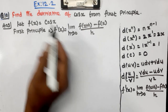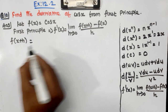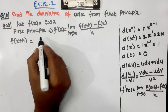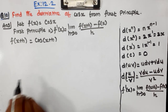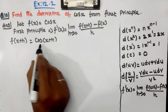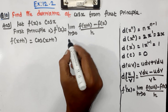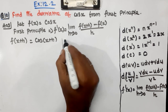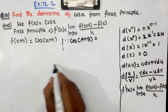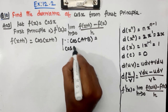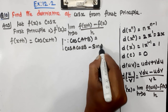Now, if we look at f(x + h), that gives us cos(x + h). Using the trigonometric formula: cos(a + b) = cos a · cos b − sin a · sin b.